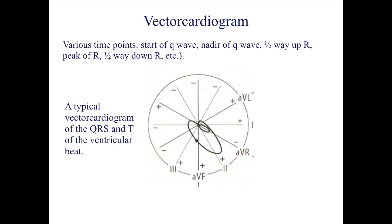Lastly, in your lab you may encounter vector cardiograms. These are plotted in a similar manner as the mean electrical axis. However, the vector is calculated from the positive or negative amplitude of the recording at several points during the recording. Negative is not subtracted from the positive. Therefore, you will determine how the vector changes throughout the cardiac cycle by plotting it at various time points, such as the ones listed on the slide. Shown is a typical vector cardiogram of the QRS and T of the ventricular beat.